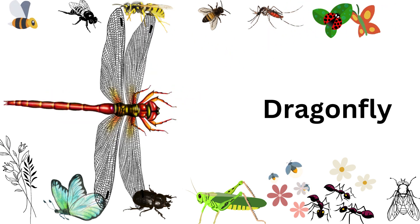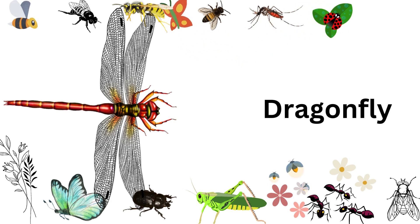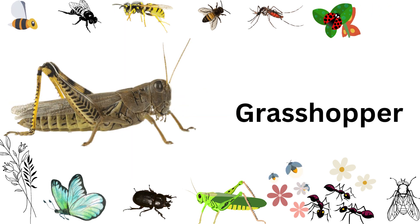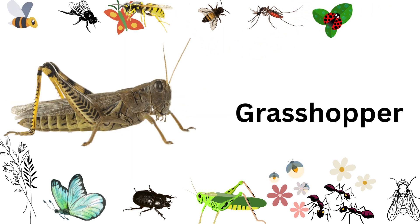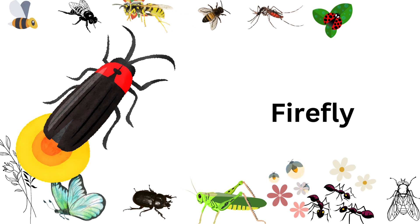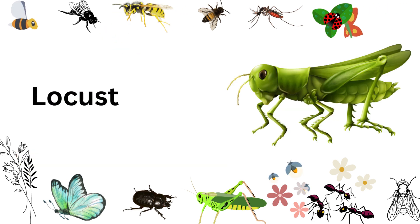This is a dragonfly. Dragonfly. This is a grasshopper. Grasshopper. This is a firefly. Firefly. This is a locust. Locust.